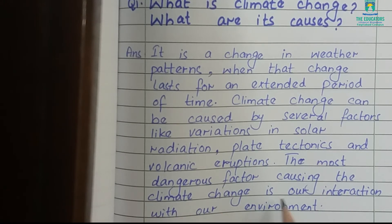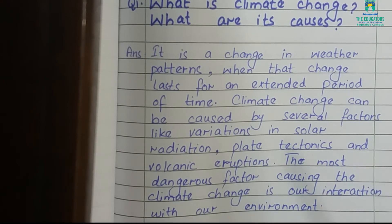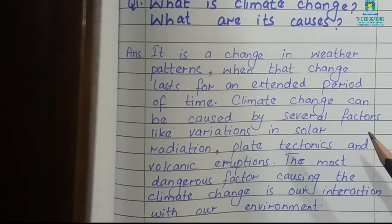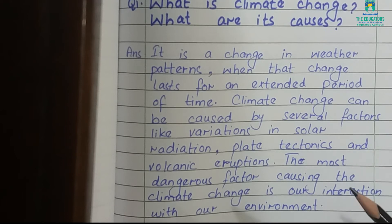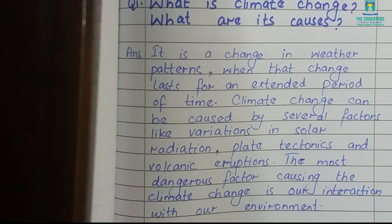But the most dangerous factor causing climatic change is our interaction with our environment — how humans interact with the environment. They cause different types of pollution, for example air pollution through smoking, noise pollution, and land pollution through different types of activities. Such human interaction with the environment also causes climatic change.